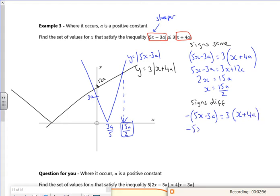So I've got minus 5x plus 3a is 3x plus 12a. So I've got 8x, I've got a minus 9a. So minus 9a over 8 is my x value. So that's minus 9a over 8.